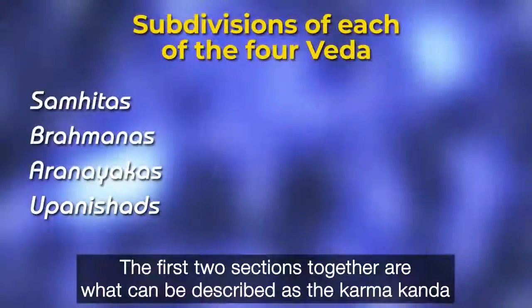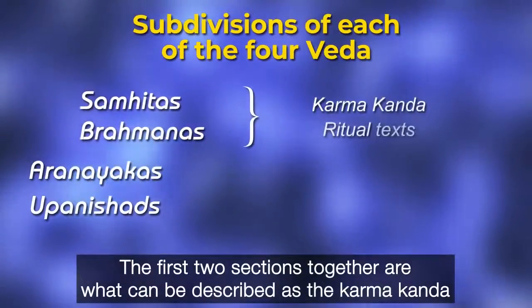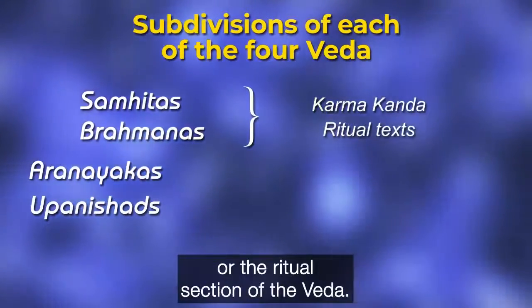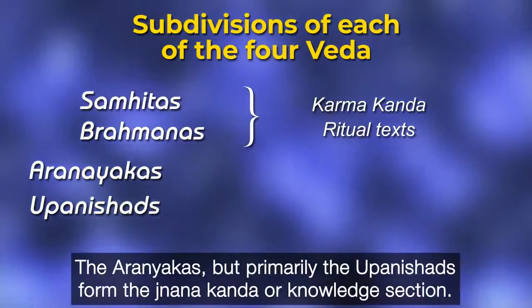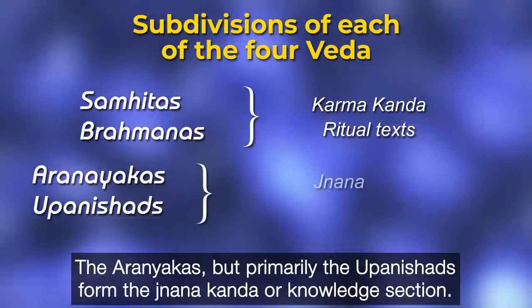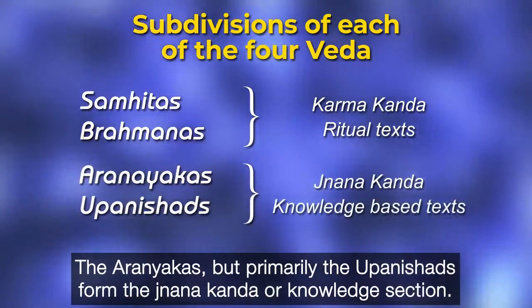The first two sections together are what can be described as the Karmakanda, or the ritual section of the Veda. The Aranyakas, but primarily the Upanishads, form the Jnana Kanda, or knowledge section.